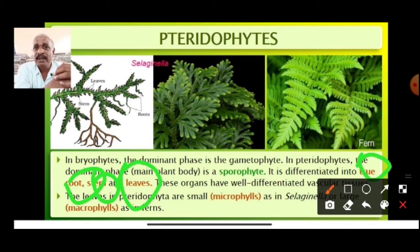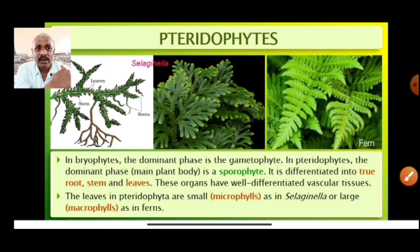In bryophytes we said that root-like, leaf-like, and stem-like structures are present. But here in pteridophytes we have very clearly distinct roots, stems, and leaves, and these organs have well-differentiated vascular tissues.